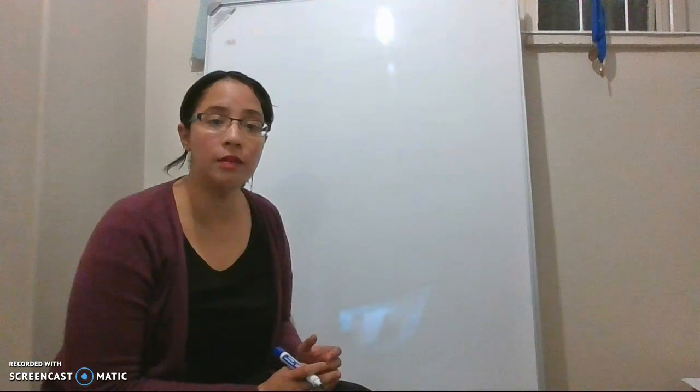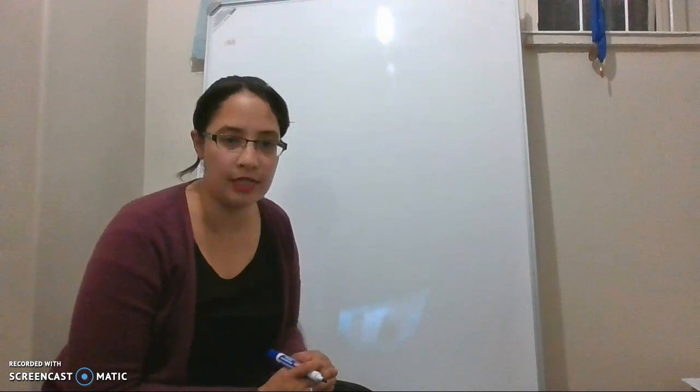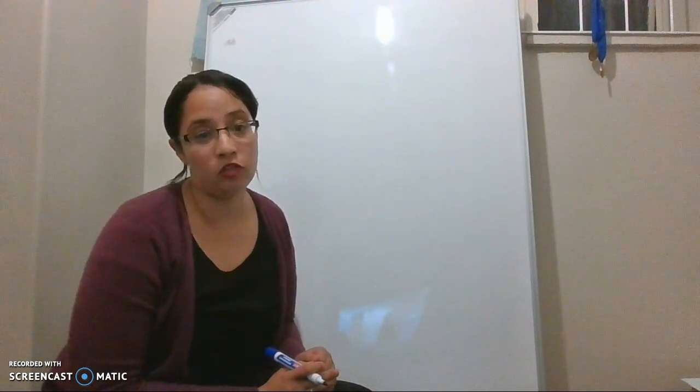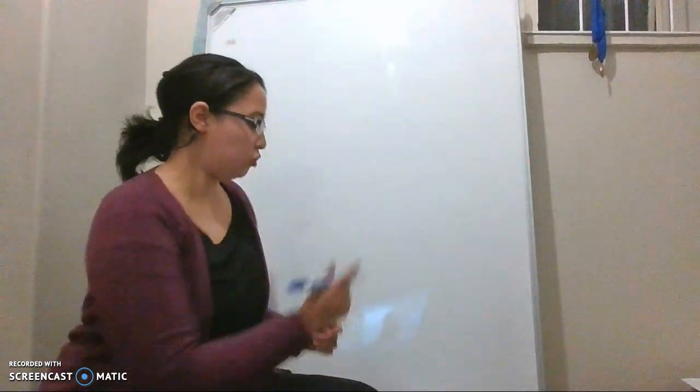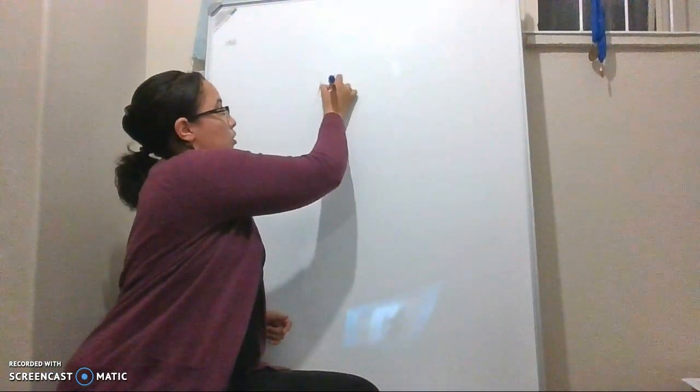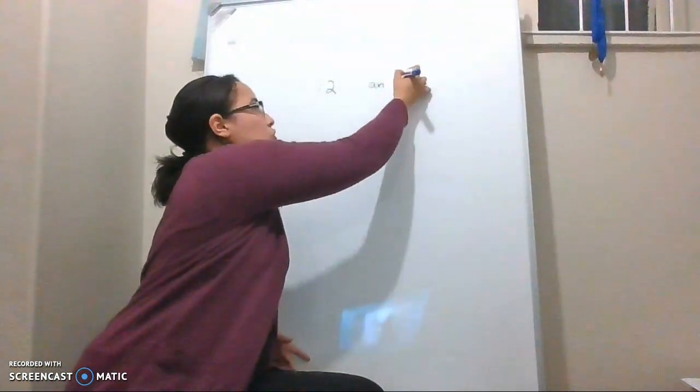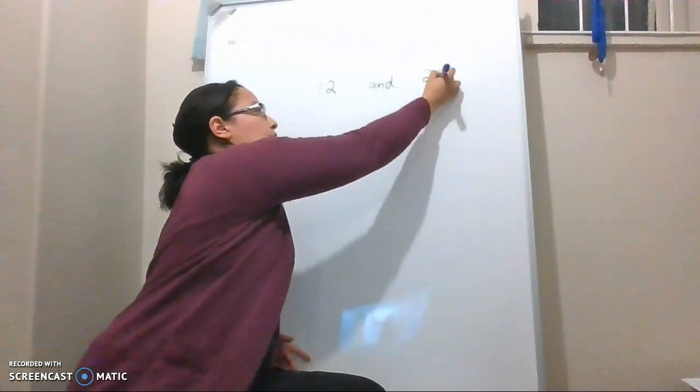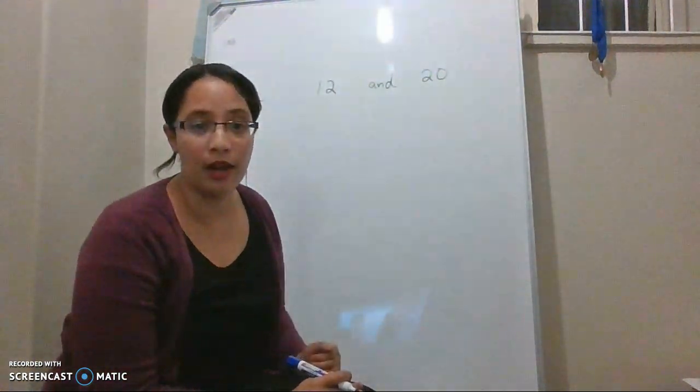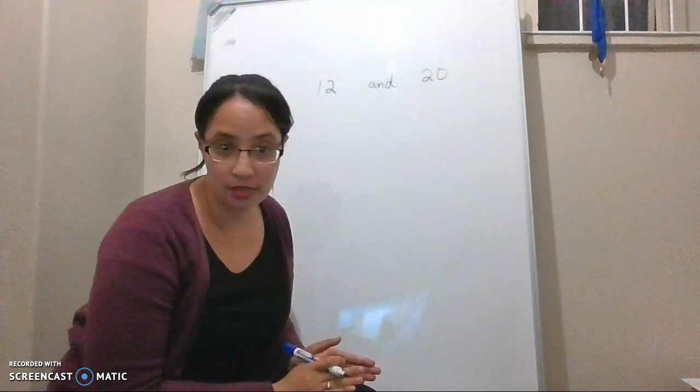So let's first speak about what a common factor is. I gave you a few examples in your notes, but I just chose one to go through with you. So 12, that's the number 12, and 20. If I compare these two numbers, I can write down all the factors.